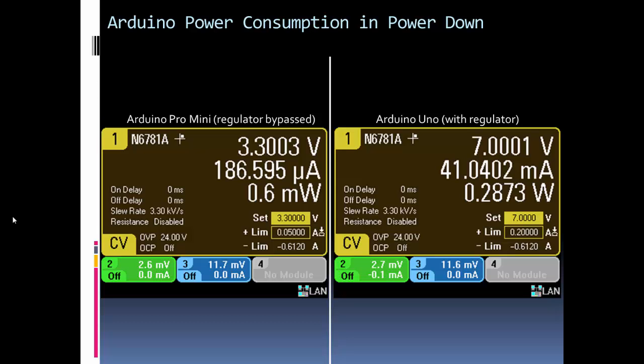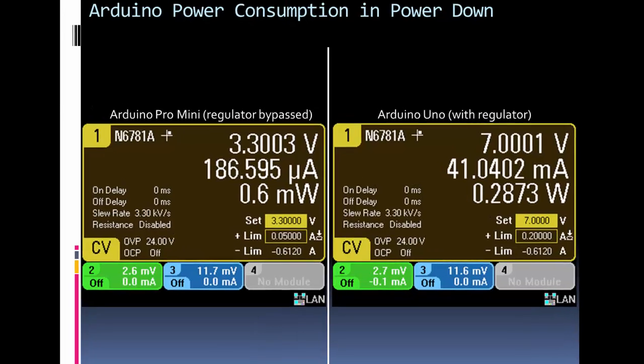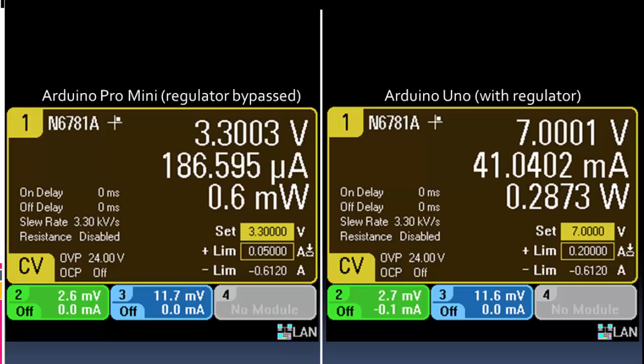And then finally, if we use the power down sleep mode, which is the most power efficient or energy efficient, we see that the Pro Mini drops to 600 microwatts. So significantly down, like 20 times down from what it was. And the Uno drops as well, but not as much, because of the linear regulator and other components on the board. But you can see with the Pro Mini the benefits of sleep mode.